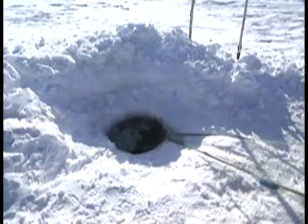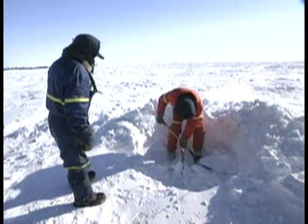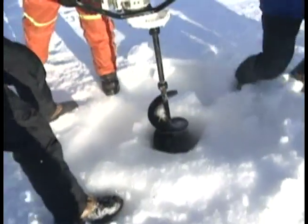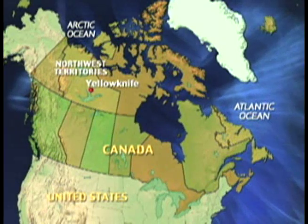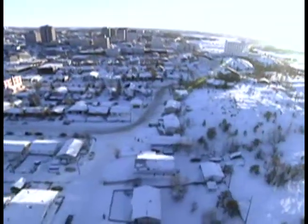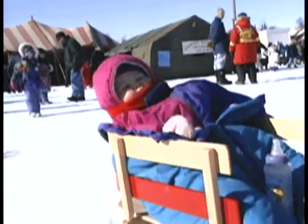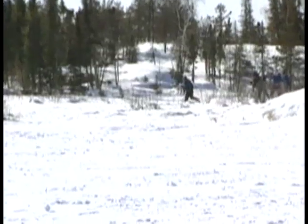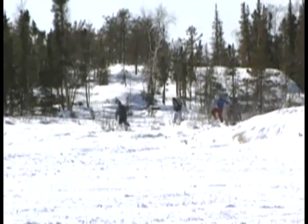Just because the lake is frozen, it doesn't mean you can't go fishing. When the waters are frozen, people drill a hole in the ice to fish for whitefish and northern pike. In Yellowknife, the capital of the Northwest Territories, the average summer temperature is around 50 degrees Fahrenheit — an improvement over the winter temperatures that drop down to 60 degrees below zero. In the early spring, the people of Yellowknife put on a caribou carnival to celebrate the end of the long winter.